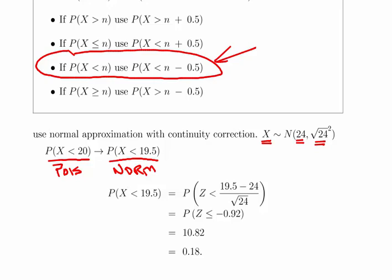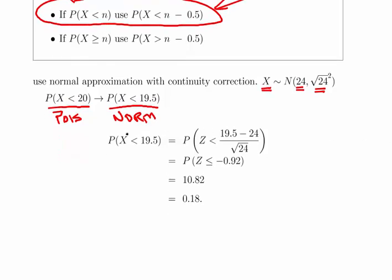We're pretty much set up. The mean is 24, the standard deviation is the square root of 24, and the value that we're interested in is 19.5.